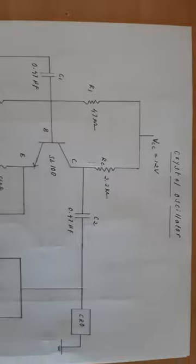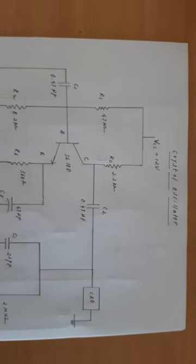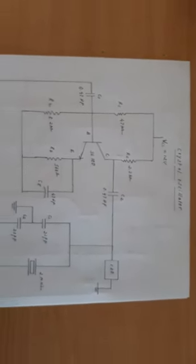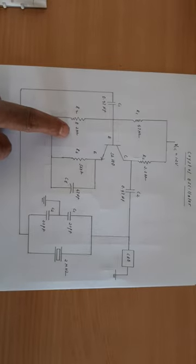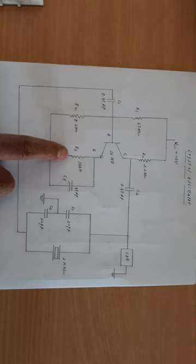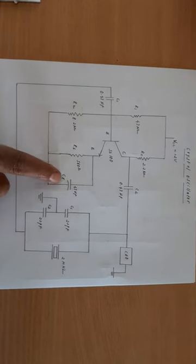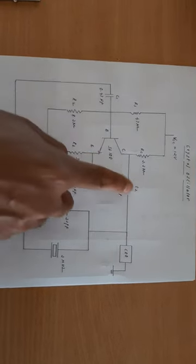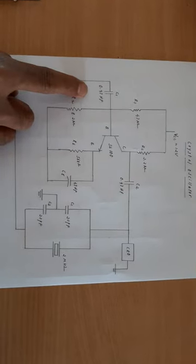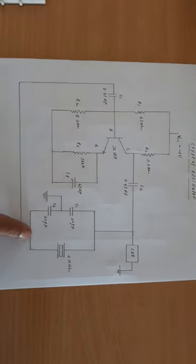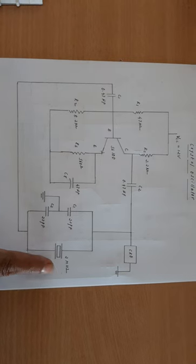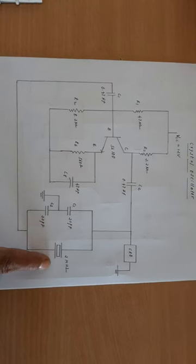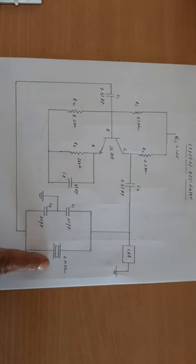Hello everyone, today I will be showing you how to connect a crystal oscillator. First, let's see the circuit diagram. We need R1 as 47 kilohm, R2 as 8.2 kilohm, RC as 2.2 kilohm, RE as 560 ohms, CE as 47 microfarad, coupling capacitors C1 and C2 as 0.47 microfarad, and for the tank circuit we need two 22 picofarad capacitors and one 2 megahertz crystal. Instead of 2 megahertz we can even use 3 megahertz or whatever crystal is available in your laboratory.